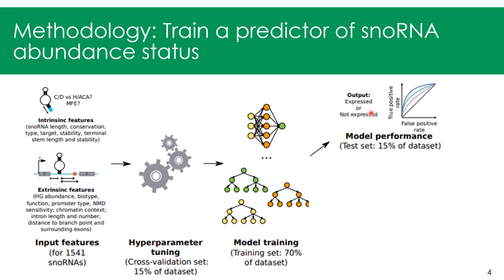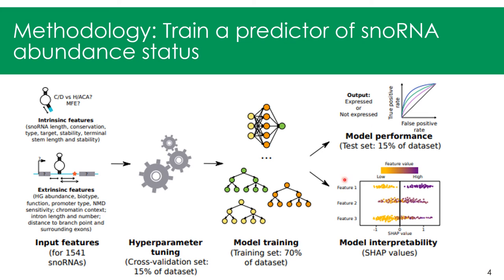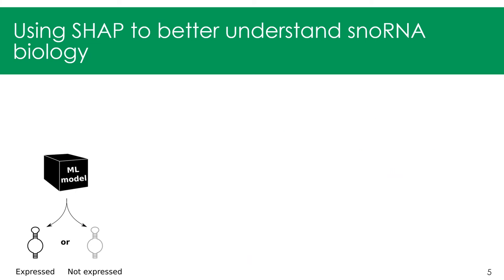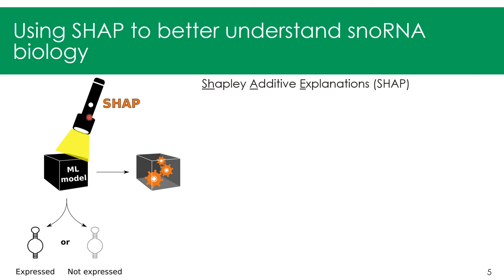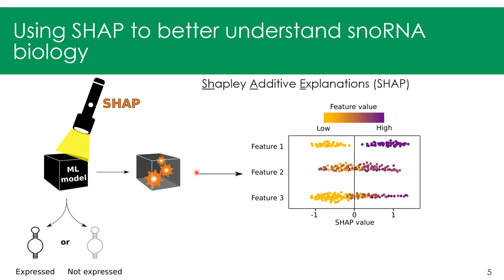With this best model I will try to better understand how it takes its decisions — essentially getting insights into model interpretability using SHAP values to gain better insights into SNORNA biology. Most machine learning models are known as black box models, so we don't really know how they classify whether a SNORNA is expressed or not. Fortunately, a new method called Shapley Additive Explanations, or SHAP, was developed to help better understand the decisions taken by the model, showing at the top the most important features used by the classifier.